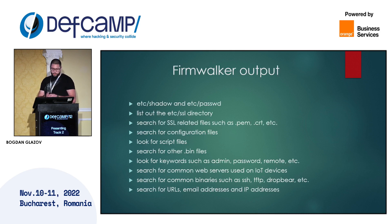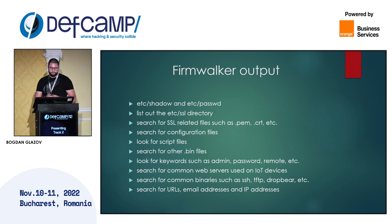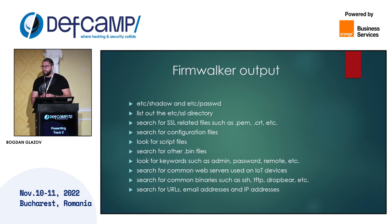FirmWalker is basically a bash script which will search the extracted file system. It will look for things like access shadow files, hashed passwords, certificates, configuration files, scripts, binaries, hardcoded or encrypted credentials, IoT network services, emails, IPs, URLs, and more.